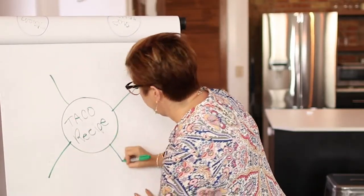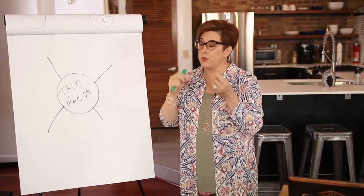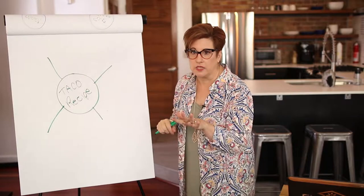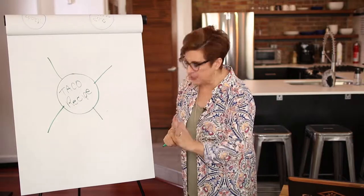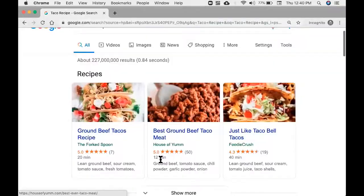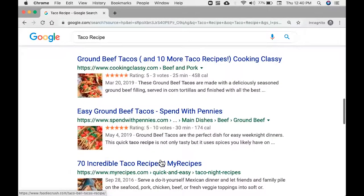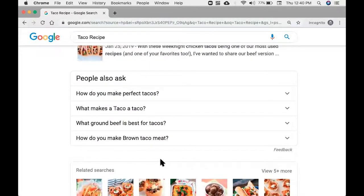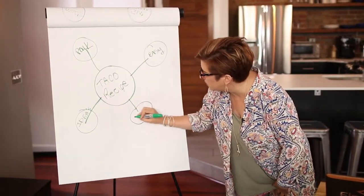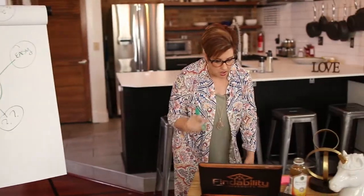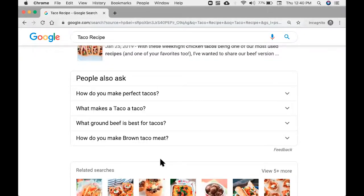What am I going to talk about that is connected? We want to put our ear to the ground and listen to what people are telling us based on what we see in Google. Now I'm going to scroll all the way to the bottom — look at these, even better. These are the questions that people are asking of Google around taco recipes. If I'm going to stop guessing, then I'm going to answer some of these questions. The questions are: how do you make perfect tacos? What makes a taco a taco? What ground beef is best for tacos? And how do you make brown taco meat?